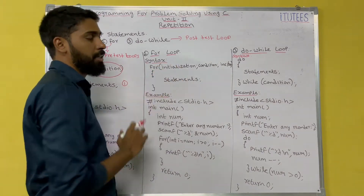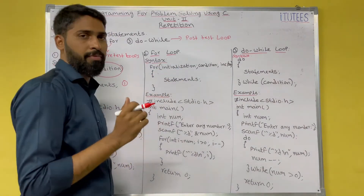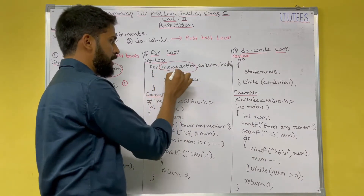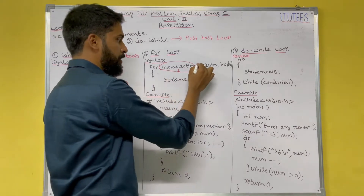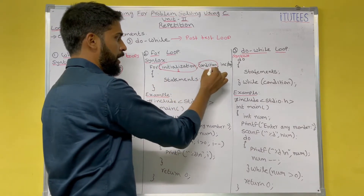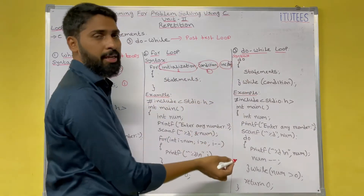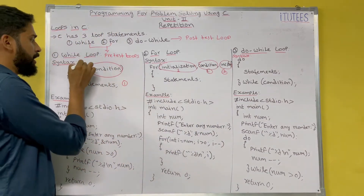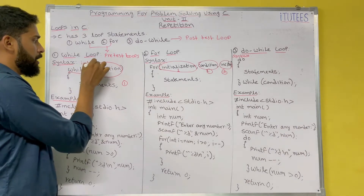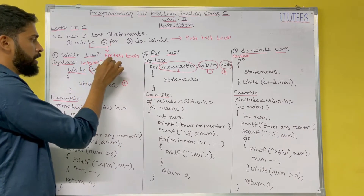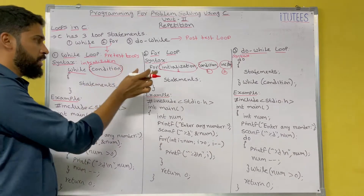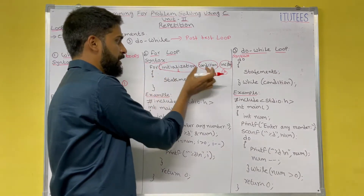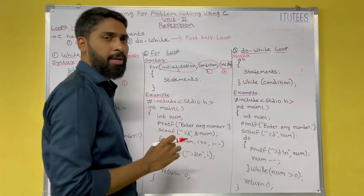Similarly, this is the syntax for the for loop. The for statement has three parts: the first is the initialization part, the second is the condition, and the third is the updating — increment or decrement. In while loop also, you write the initialization, then condition, then the updation statements.